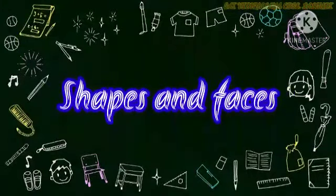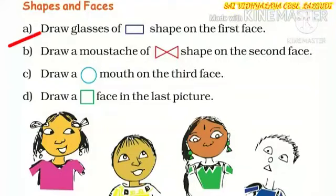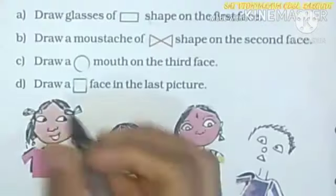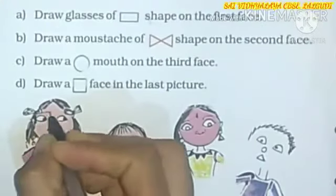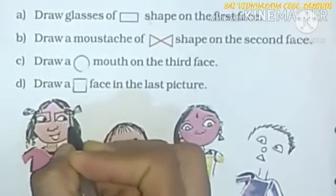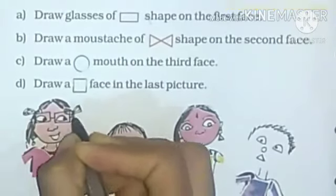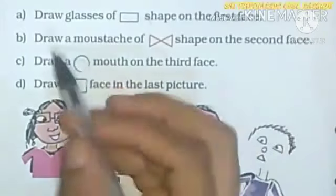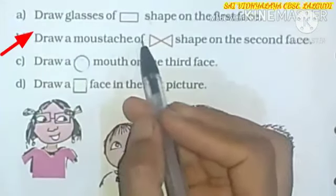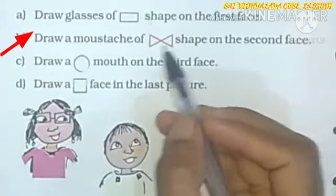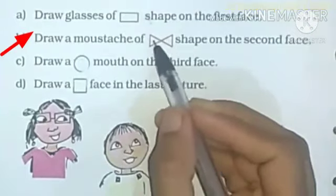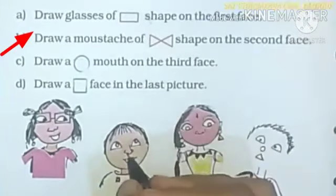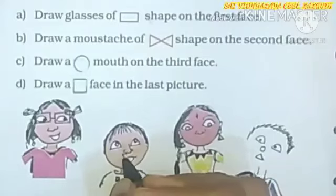Next topic. Shapes and faces. First question. Draw glasses of rectangle shape on the first face. Now, I am drawing 2 rectangles for making glasses. Next question. Draw a mustache of this shape on the second face. This shape is look like 2 triangle. Let's draw a mustache.